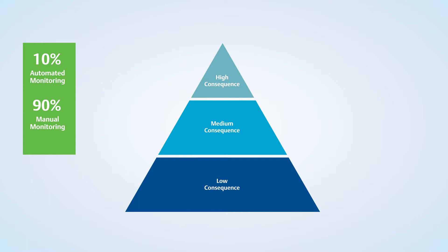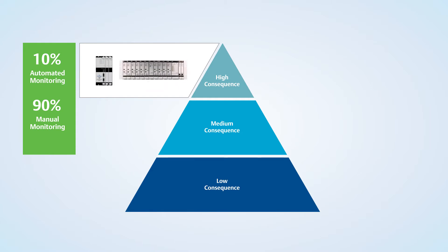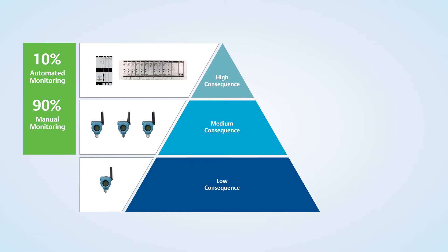Today, 90% of total assets are monitored manually, meaning the data collected must be reviewed by a vibration analyst to diagnose developing issues. The criticality of the asset determines how it will be monitored. The most critical and most expensive to replace are monitored using online rack-mounted systems that provide continuous protection capabilities. The balance of plant assets is monitored using either wireless devices for economical continuous monitoring or handheld instruments used to collect data on calendar-based routes.